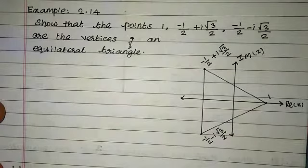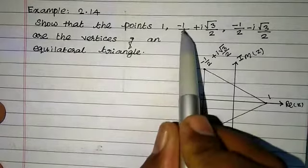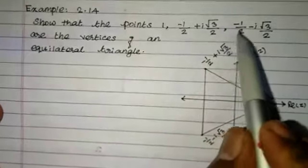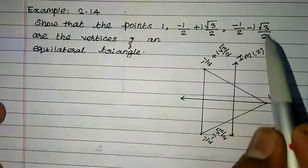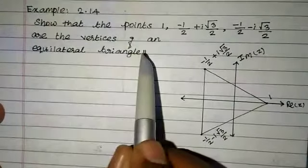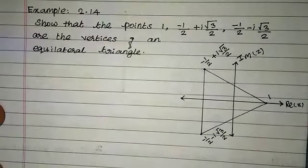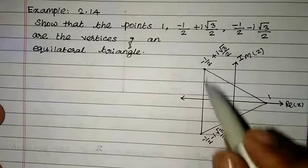Example 2.14. Show that the points 1, minus 1 by 2 plus i root 3 by 2, and minus 1 by 2 minus i root 3 by 2 are the vertices of an equilateral triangle. An equilateral triangle has three equal sides.